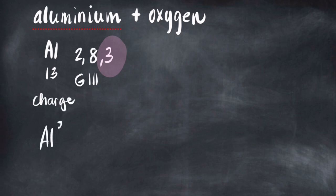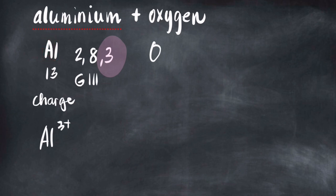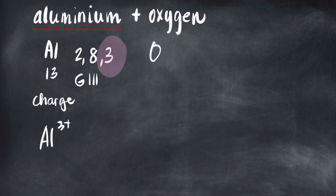So let's put that here: aluminum 3+. By the way, when you label it, it needs to be a capital letter followed by lowercase — for example, 'Al' not all caps or all lowercase. It needs to be capital and lowercase.